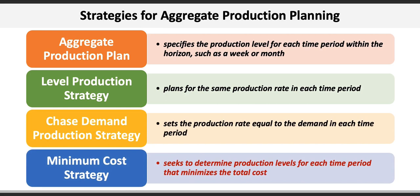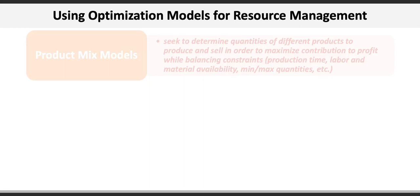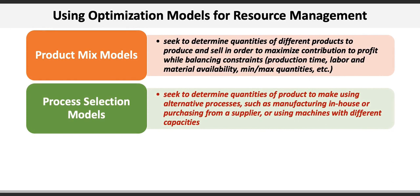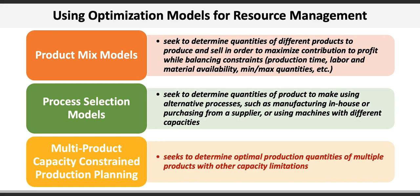Considering the complexity involved with balancing demand against production, managers can leverage different optimization models for resource management. One such model is the product mix model, which seeks to determine quantities of different products to produce and sell in order to maximize contribution to profit while balancing constraints including production time, labor and material availability, and minimum/maximum quantities. A second is the process selection model, which determines quantities to produce using alternative processes such as manufacturing in-house, purchasing from a supplier, or using machines with different capacities. Finally, there is a multi-product capacity constraint model that seeks to determine optimal production quantities of multiple products with other capacity limitations. These models usually involve software such as Microsoft Excel or other specialized optimization model software.